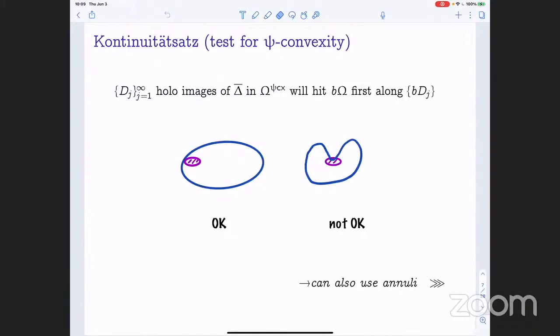How does the continuity principle work? Suppose I have a sequence of holomorphic images of the closed unit disk. Then if I'm working inside a pseudoconvex domain, in the limit these disks will hit the boundary of omega first along the boundaries of the disks. The situation where we hit the boundary of omega first along interior points of our disks is not permitted. It will also be very important later in the talk that I can use annuli instead of just disks for this purpose.